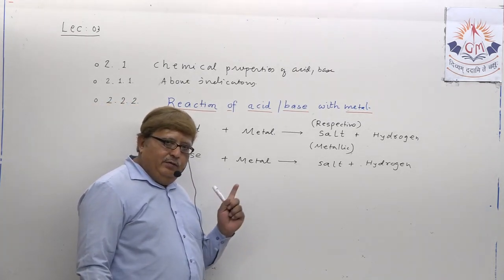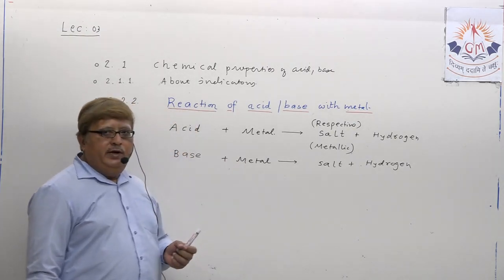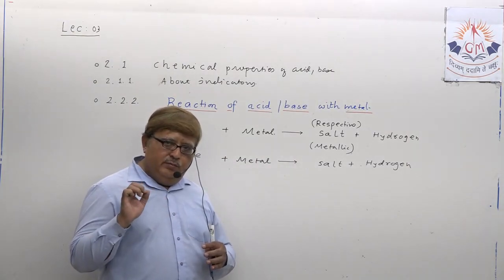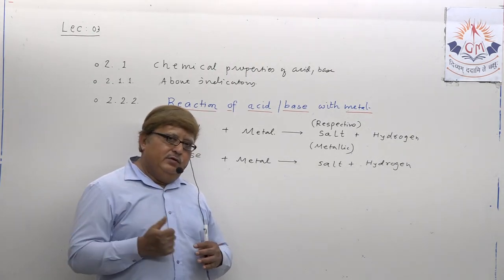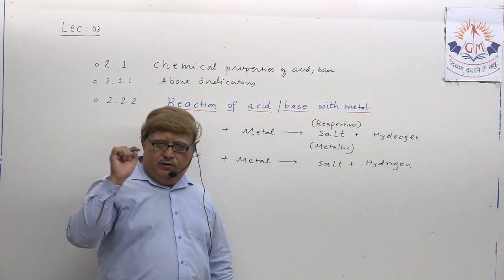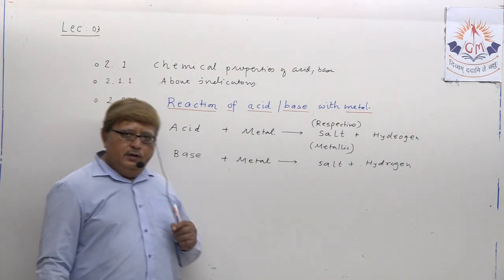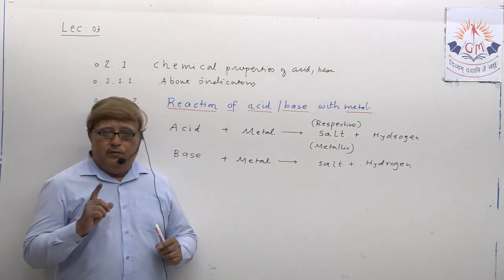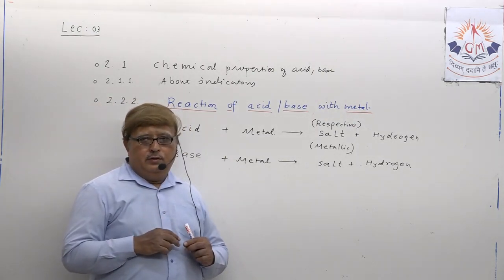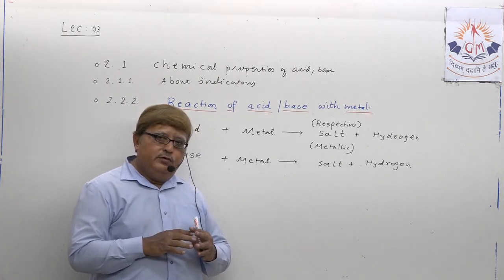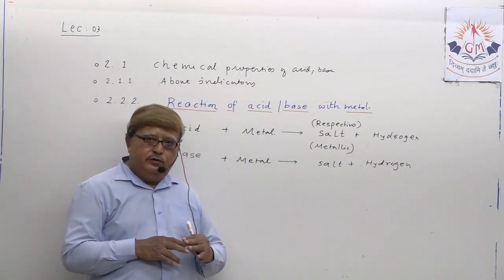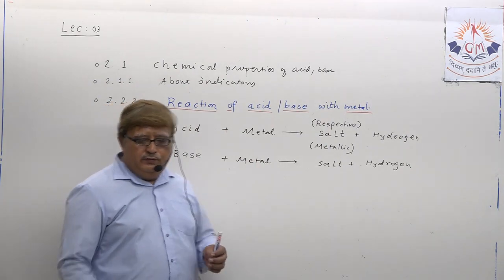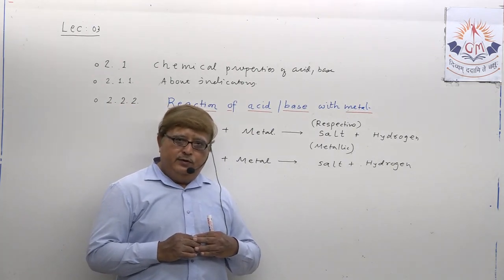The same word equation applies when base reacts with metal. Similar to acid, base also reacts with metal and produces a salt and releases hydrogen gas. So to confine in one line: when acid or base reacts with metal, they produce respective metallic salt and hydrogen gas. Whenever acid and base react with metal, they produce respective metallic salt and hydrogen gas. This is the generalized statement which you can write.